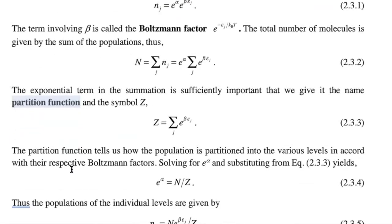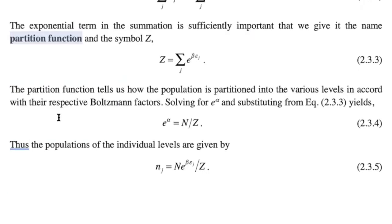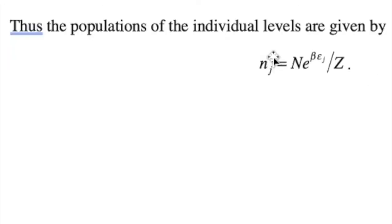The partition function tells us how the population is partitioned into the various levels of the system according to the Boltzmann factors. We can solve for e to the alpha, that's just the total number of particles n divided by the partition function. The population of the state is just the total number of particles times the Boltzmann factor divided by the partition function.